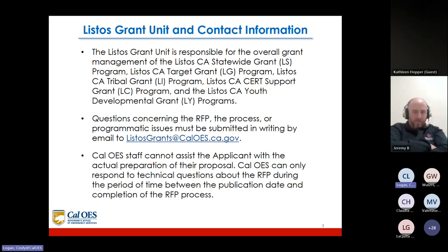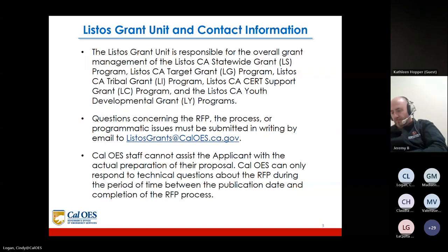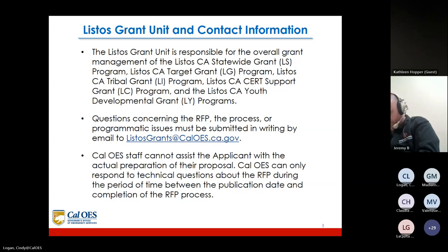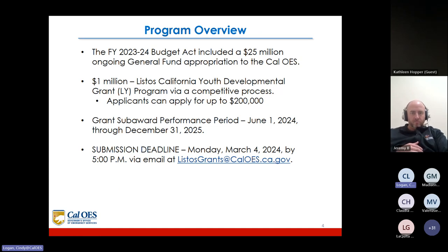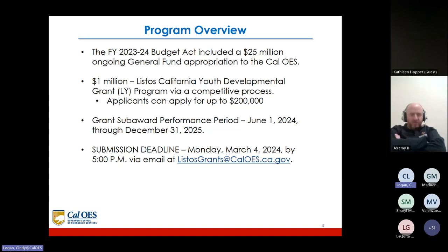Questions regarding the RFP, the process, or programmatic issues must be submitted in writing by email to listosgrants@caloes.ca.gov. Cal OES cannot assist the applicant with the actual preparation of their proposal. We can only respond to technical questions about the RFP during the period of time between the publication date and completion of the RFP process.